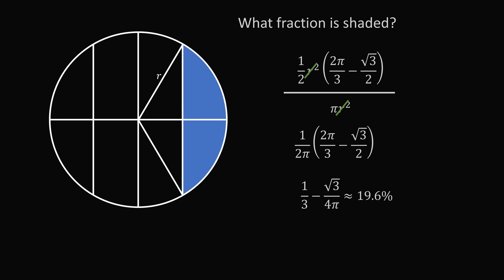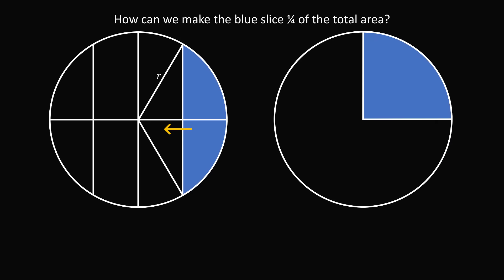So this now leads to another interesting question. Imagine we were to change where this slice is, and we move it closer to the center of the circle. The area of the circular segment is going to increase. So at what point can we move this so that we can make the blue slice 1 fourth of the total area, so that it will exactly be equal to one of these quarter circles?